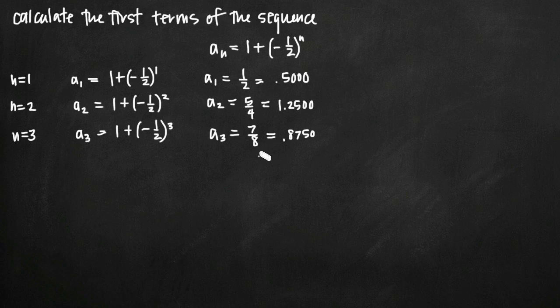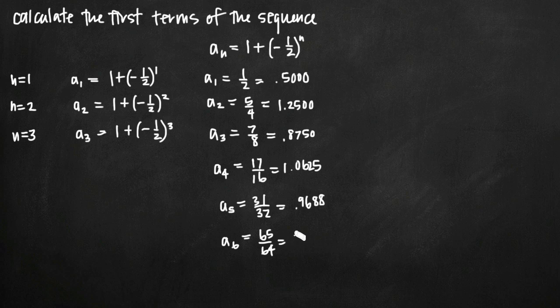Now I won't keep going with all of the tedious writing, but what you'll find is that if you keep going, let's say to the first six terms of the sequence, you'll get a_4 equals 17/16 or 1.0625. You'll get a_5 equals 31/32, which is also equal to 0.9688. And then you'll get a_6 equals 65/64, which is also 1.0156.